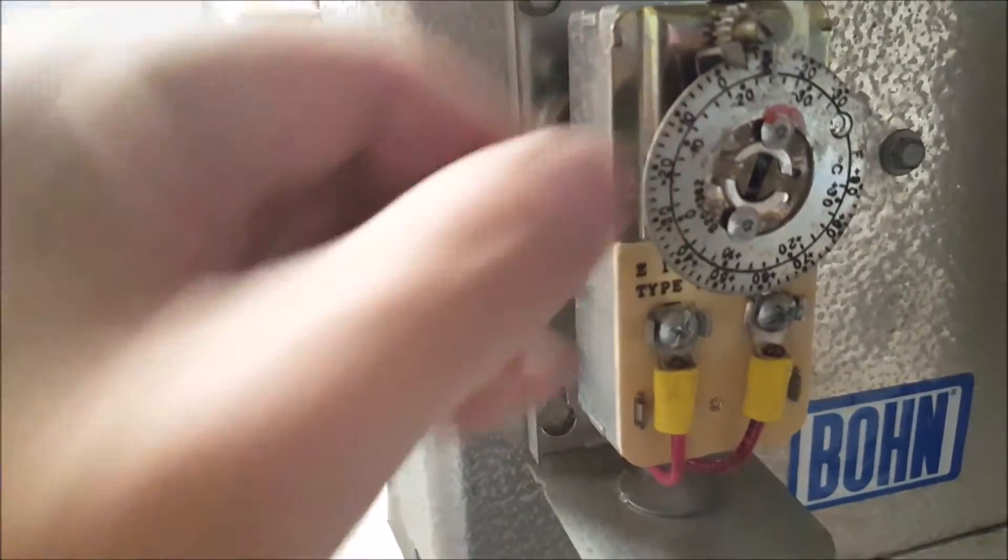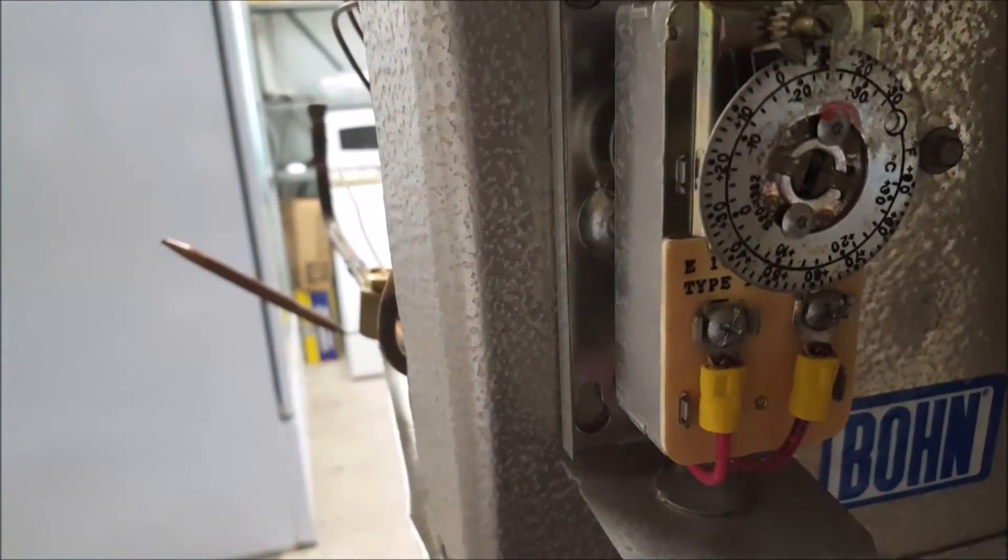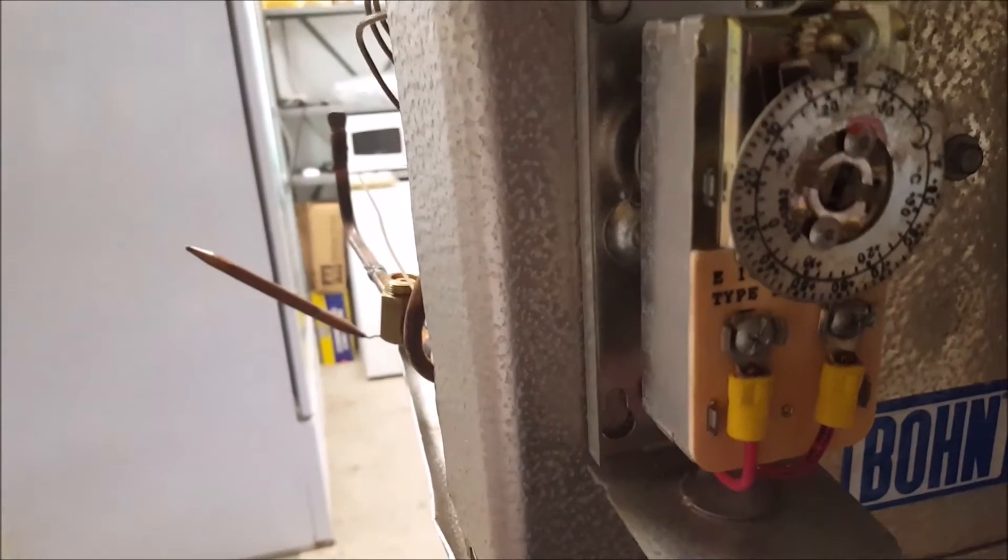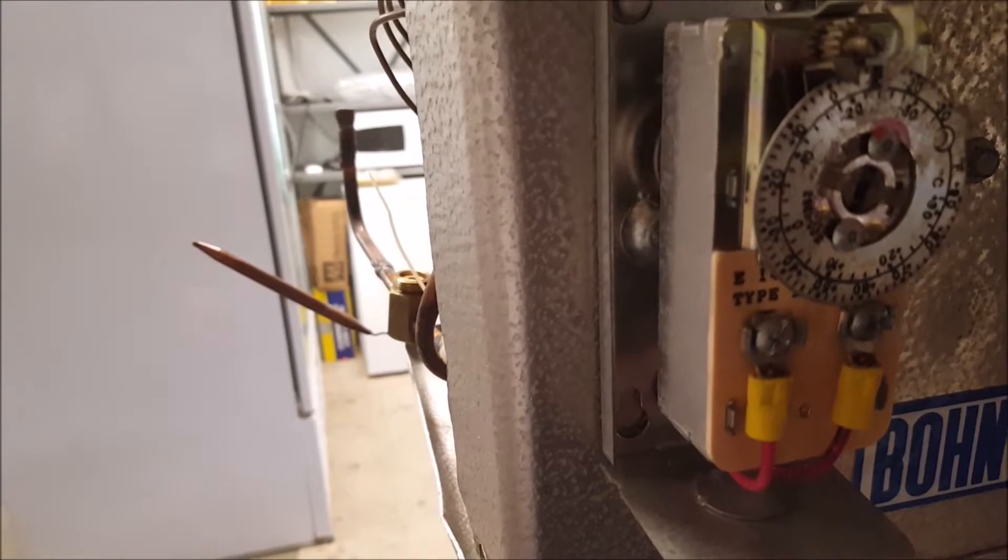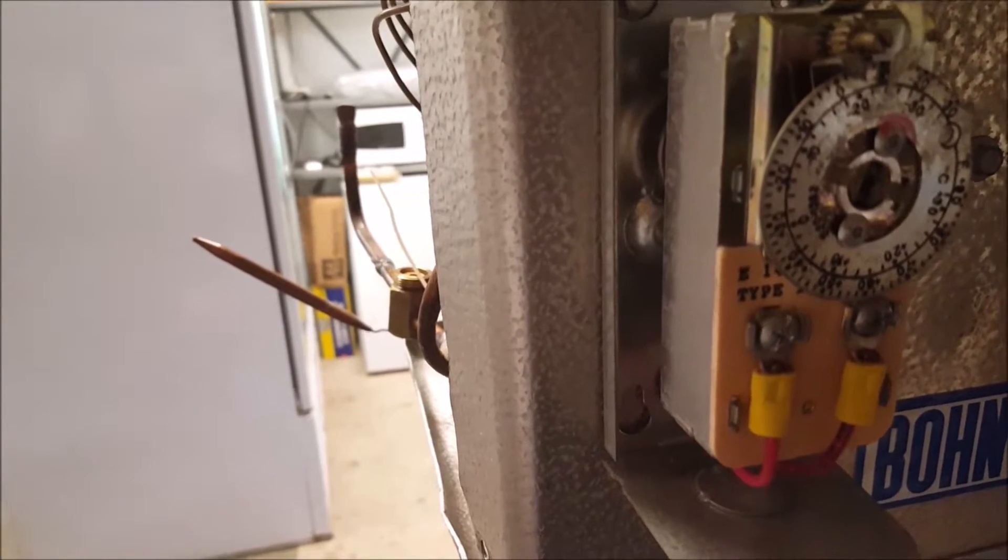If you notice this other little arrow next to it here, that's the temperature at which it's going to come back on. It's going to cycle back on. Generally there's about a six degree differential, so if it cuts off at negative 10, it will cycle back on somewhere around negative 4.